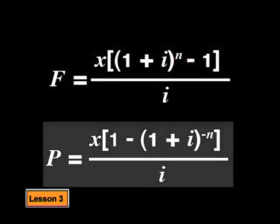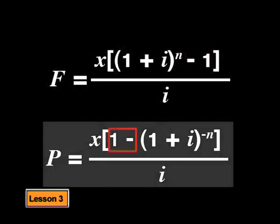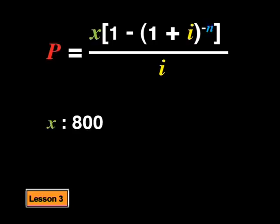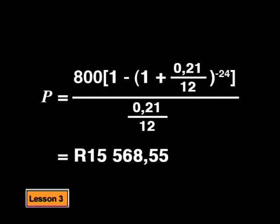In the future value annuity formula, we subtract 1 from the exponential term, but in the loan formula, we subtract the exponential term from 1. Now verify you get the same answer using the present value formula. I know the instalment x is 800 rand, the number of instalments is 24, and the monthly interest is 0.21 divided by 12. Substituting these values into the formula gives p equal to 15,568 rand and 55 cents, rounded off to the nearest cent - confirming the earlier result.